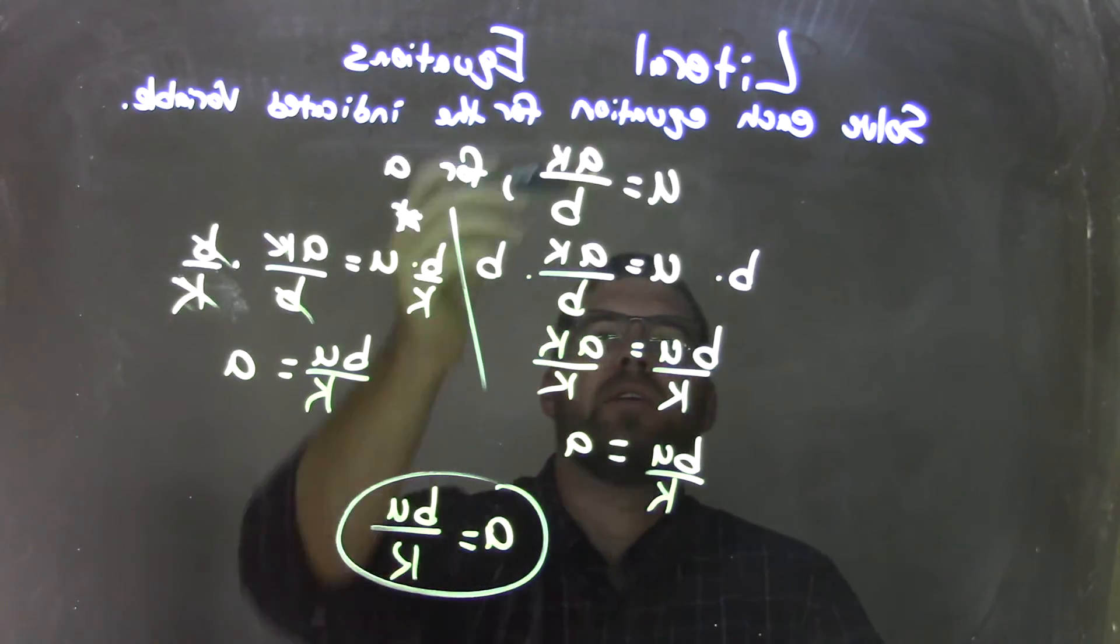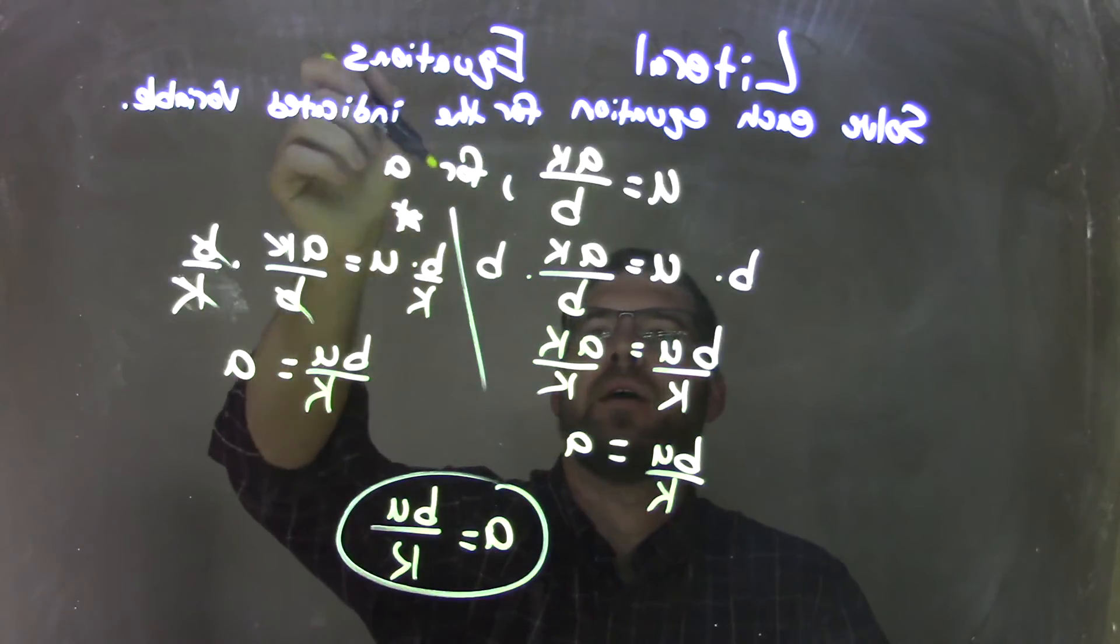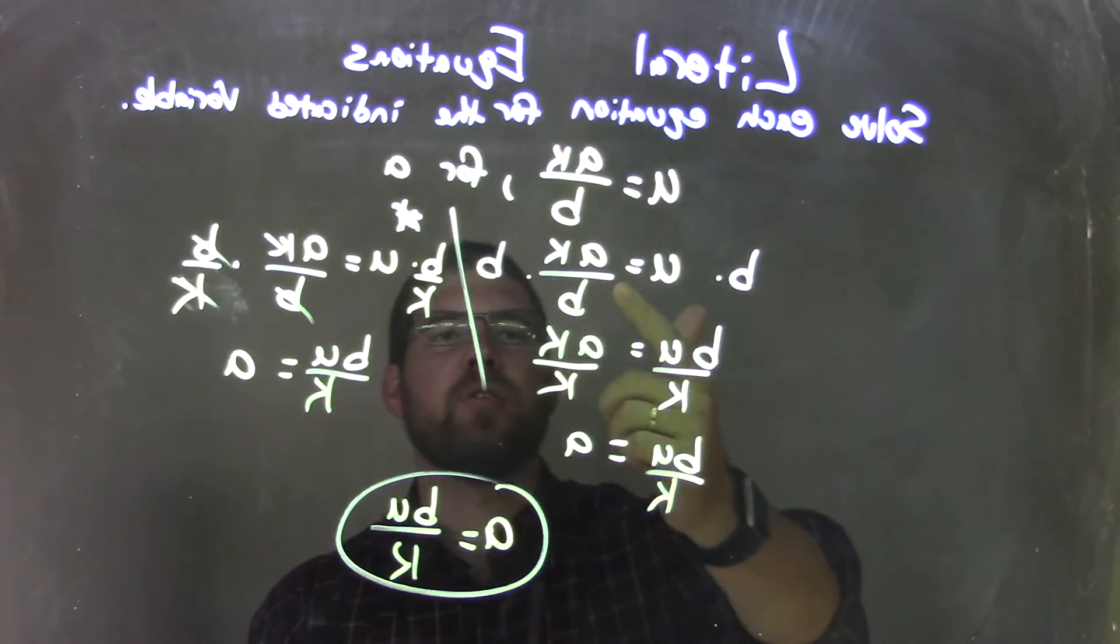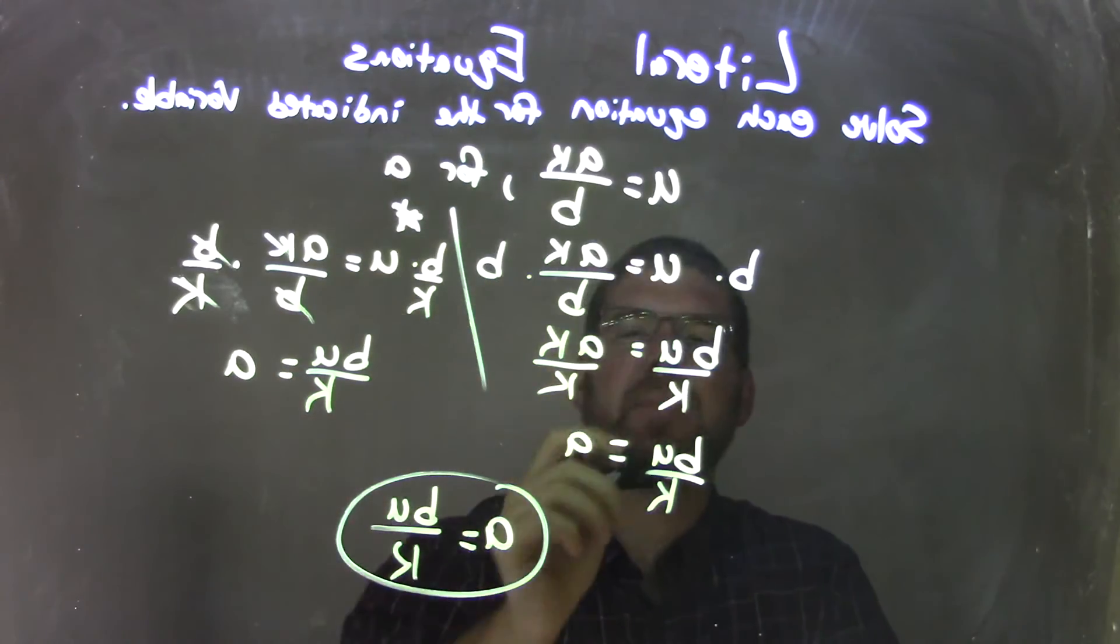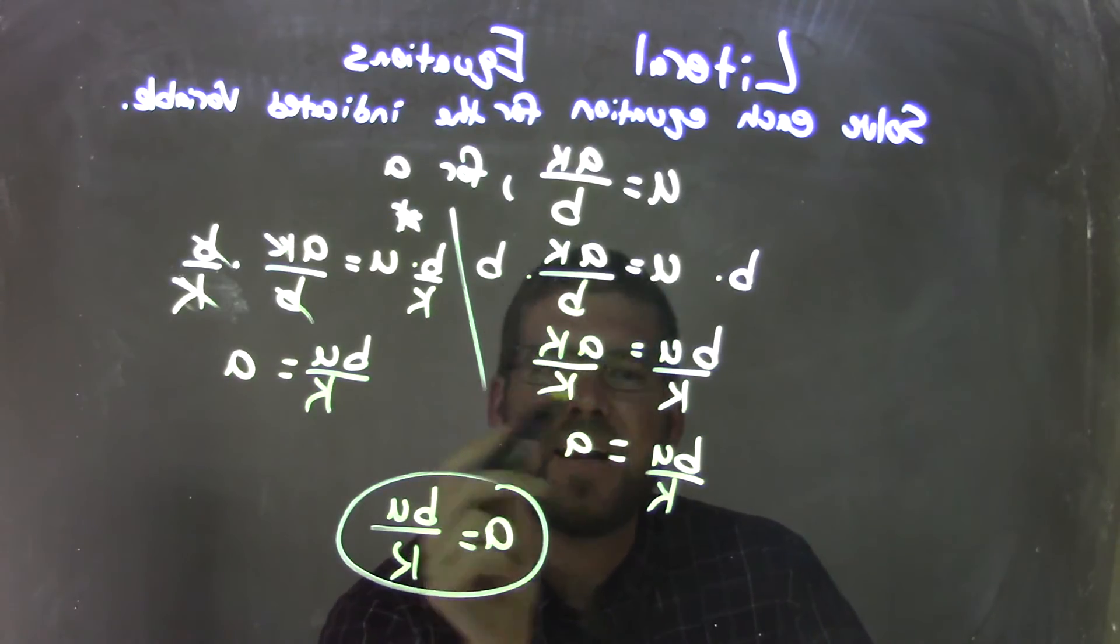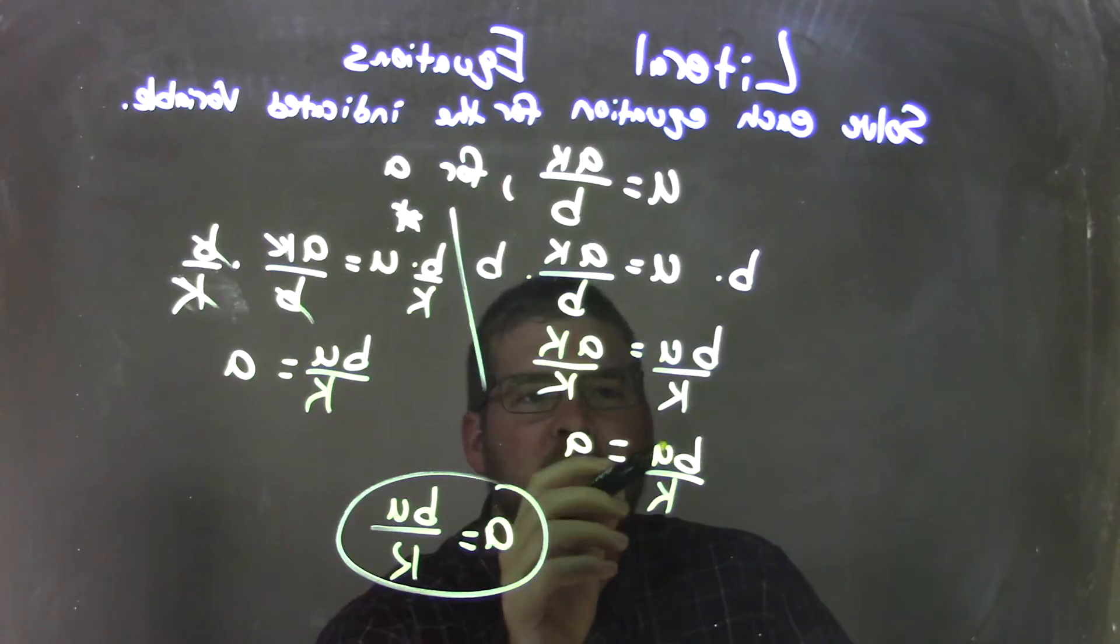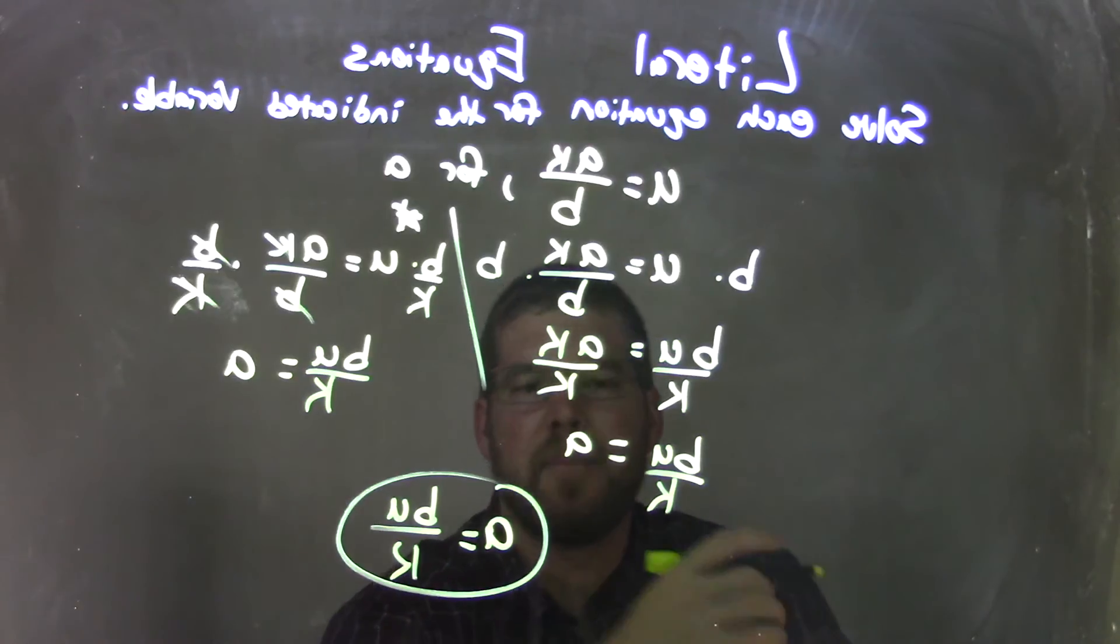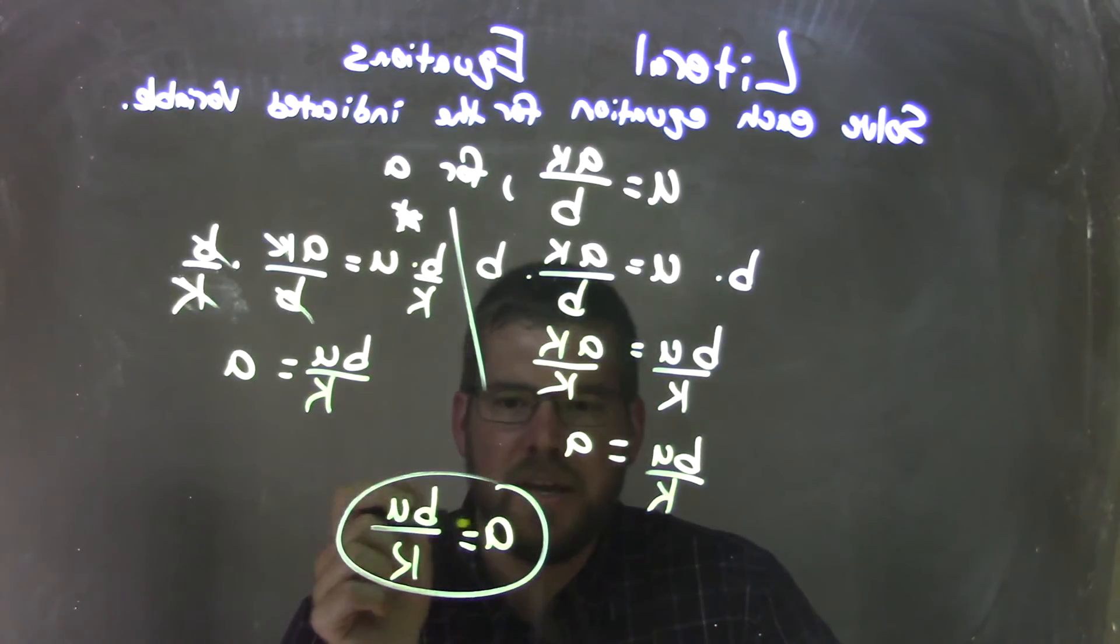So let's recap. We're given U equals AK over B and we're solving that for A. I multiplied both sides by B leaving me with BU on the left equals AK on the right, then I divided by K to both sides leaving me with BU over K on the left and A by itself on the right. A is isolated. We're basically done. I rewrote that to have A come first because that looks nice and neat.